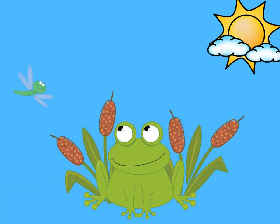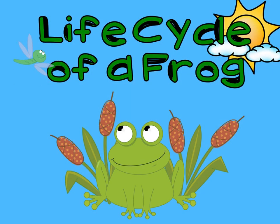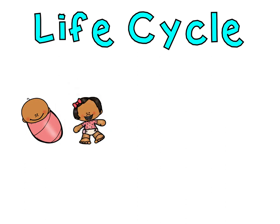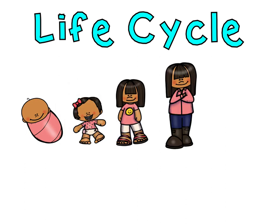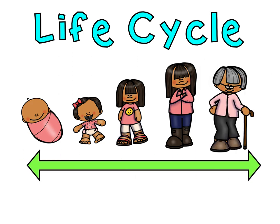Hi everyone, today we're going to learn about the life cycle of a frog. A life cycle is the changes a living thing goes through during its life. For example, we start off as babies, then we grow into children, and finally into an adult — this is the life cycle we go through.